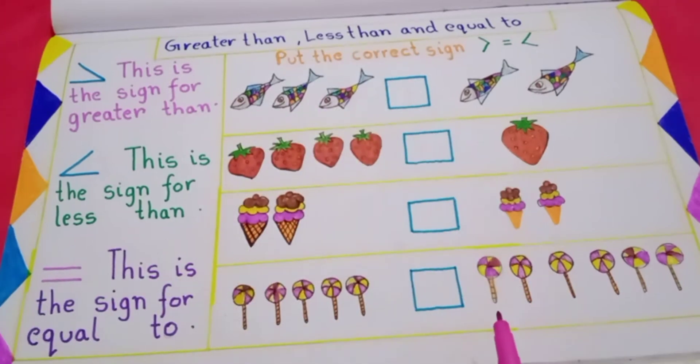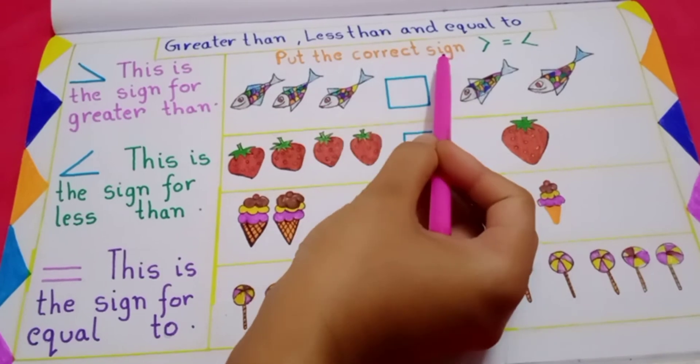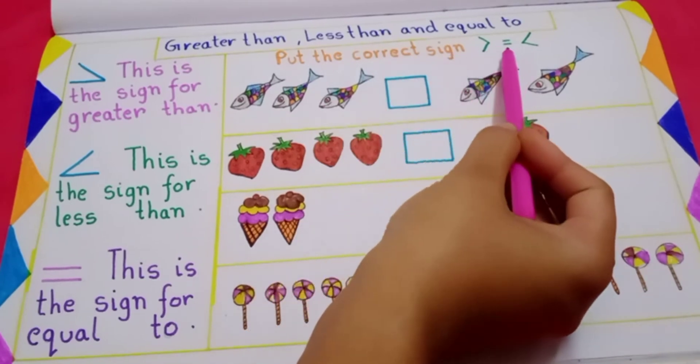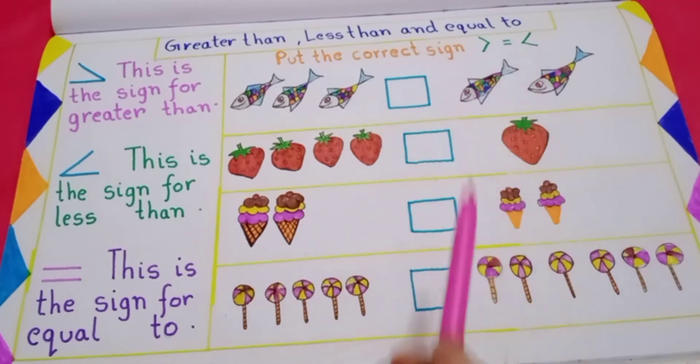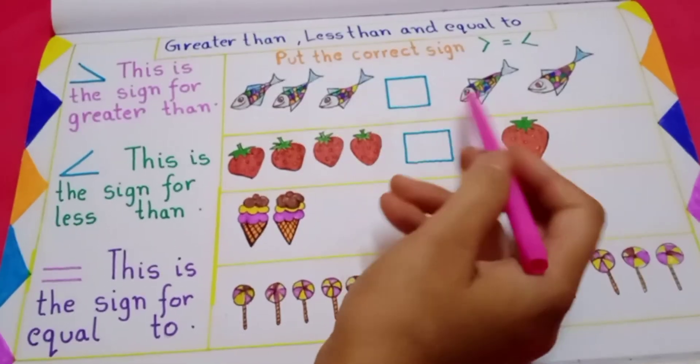And let's start a worksheet. So what you have to do here, you have to put the correct sign: greater than, equal to, less than. You have to put the correct sign. But before that, don't forget to compare both sides.